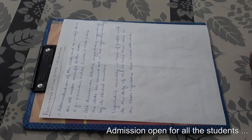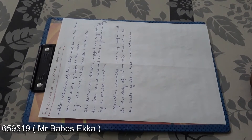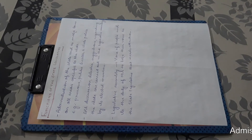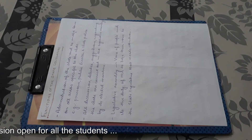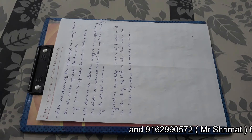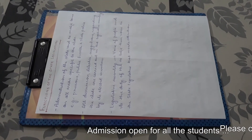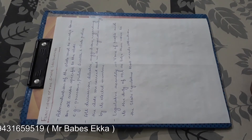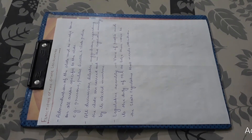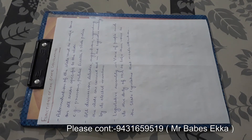Now, what are the functions of the state legislature? This is the last topic of our chapter. The first function is administration of the state and making laws on all areas specific to the state. There are three types of lists: the Union List, the State List, and the Concurrent List. The state legislature makes laws on subjects in the State List — such as public health, state police, prisons, etc. On the Concurrent List, both the state government and central government can make laws.